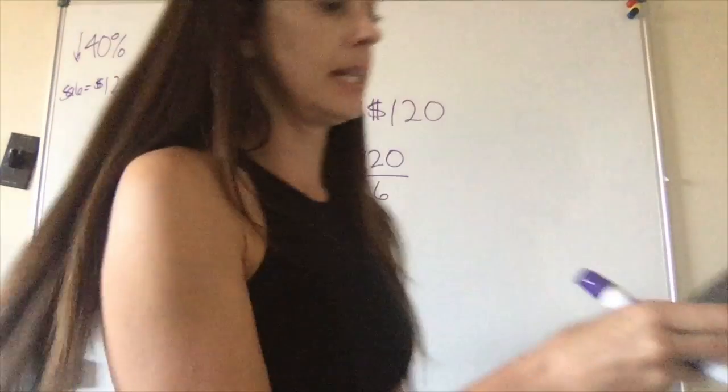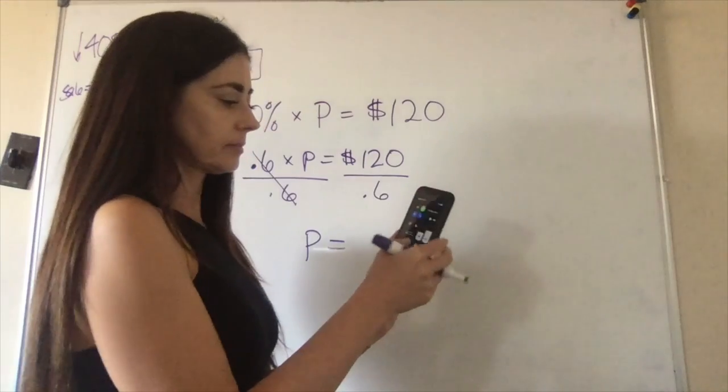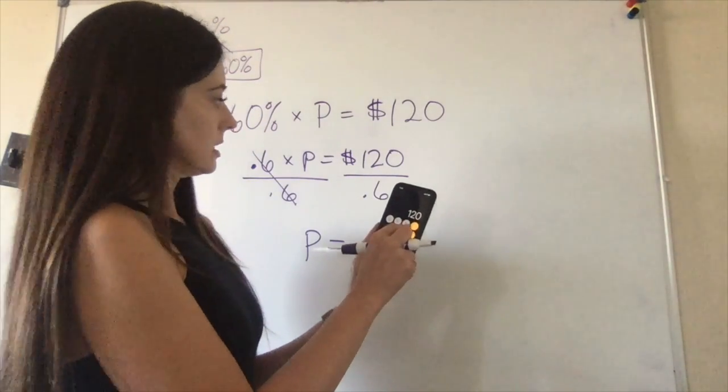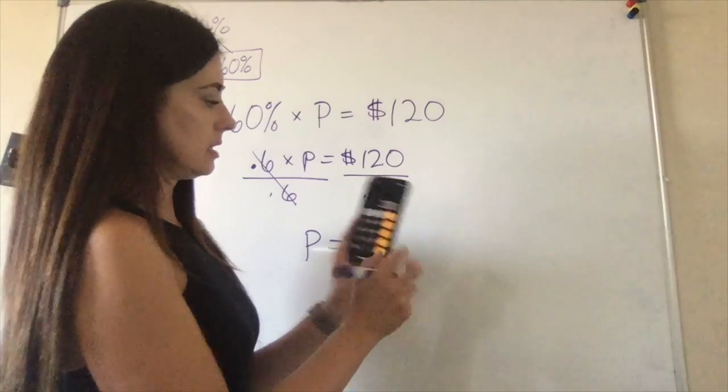This time I'm going to get my handy dandy calculator. 120 divided by 0.6 is $200.